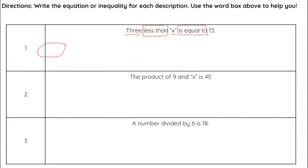So when we are looking at this, three less than x, we're not going to write it in the order that it's given. Three subtract x. That's not what it means. Three less than x is really x minus three. So let's make sense of that.